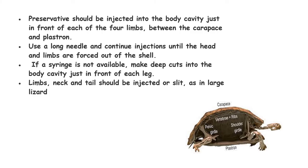For turtle preservation, preservative should be injected into the body cavity just in front of each of the four limbs, between the carapace (the dorsal shell) and the plastron (the ventral shell), using a long needle. Continue injection until the head and limbs are forced out of the shell. Inject several times in the head and neck region. If a syringe is not available, make deep cuts into the body cavity in front of each leg. The limbs, neck, and tail should be injected or slit as in large lizard preservation.